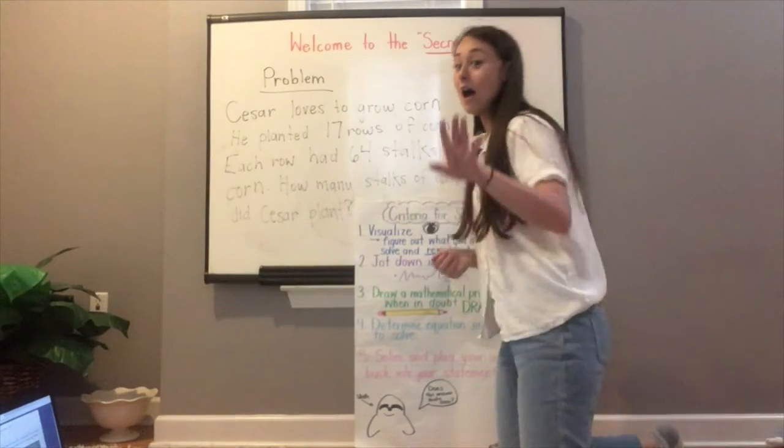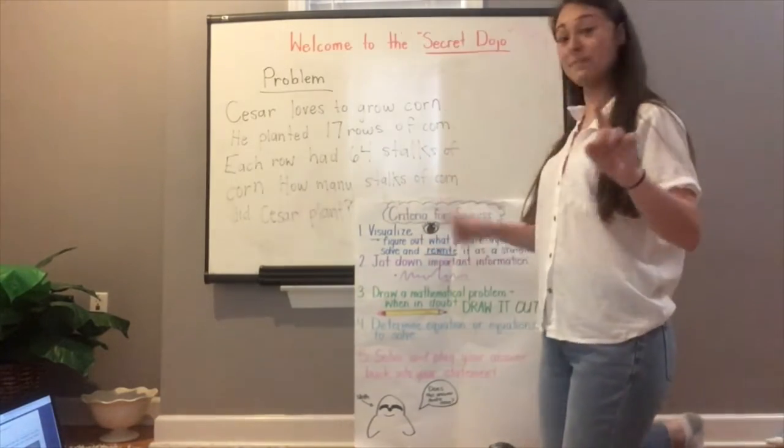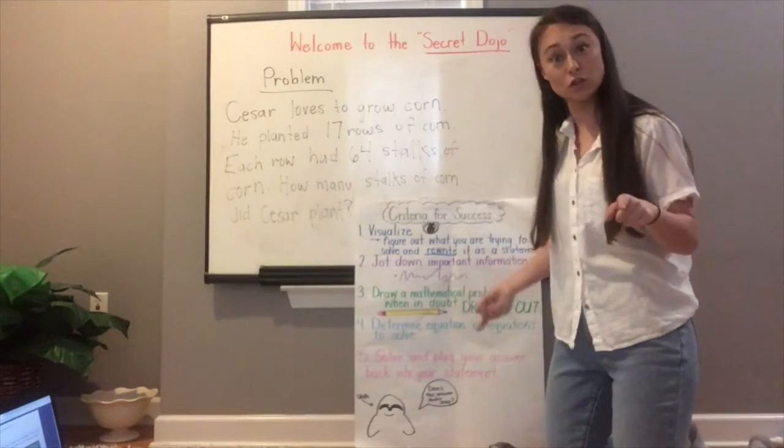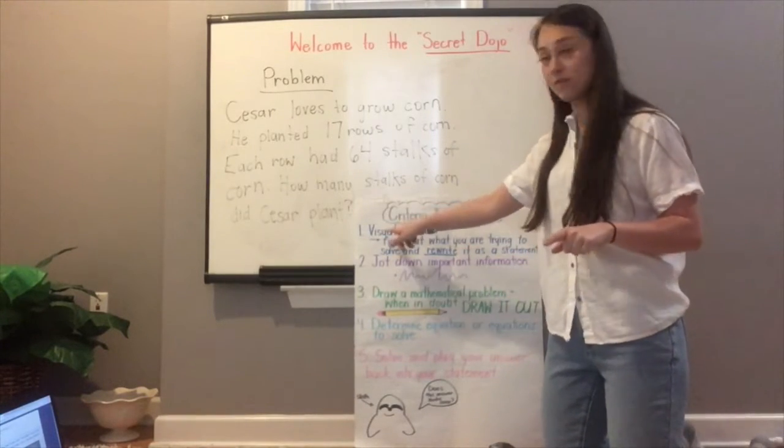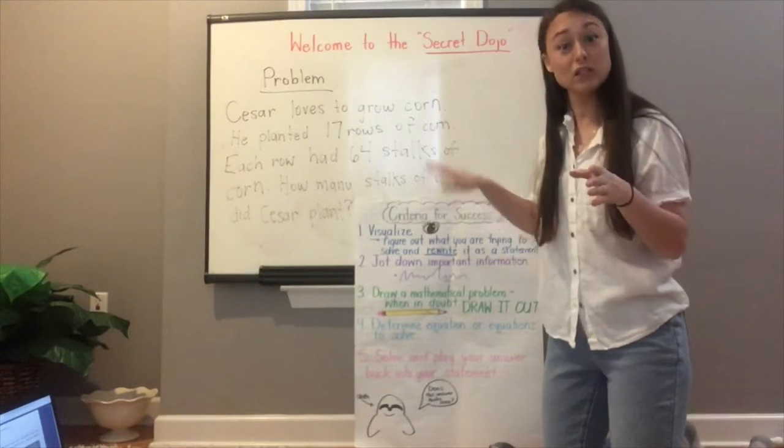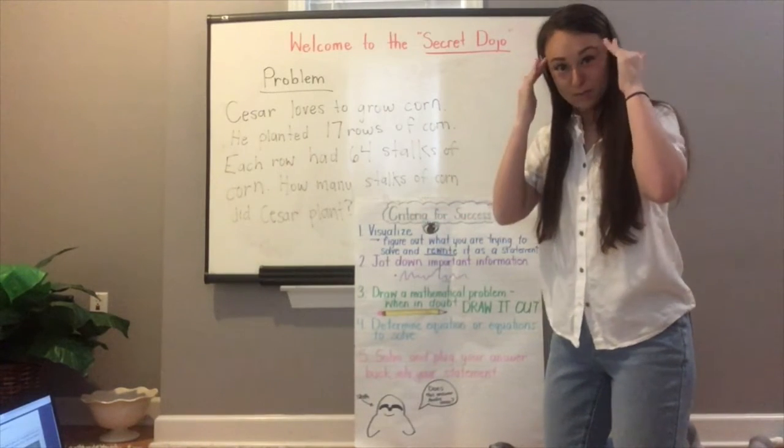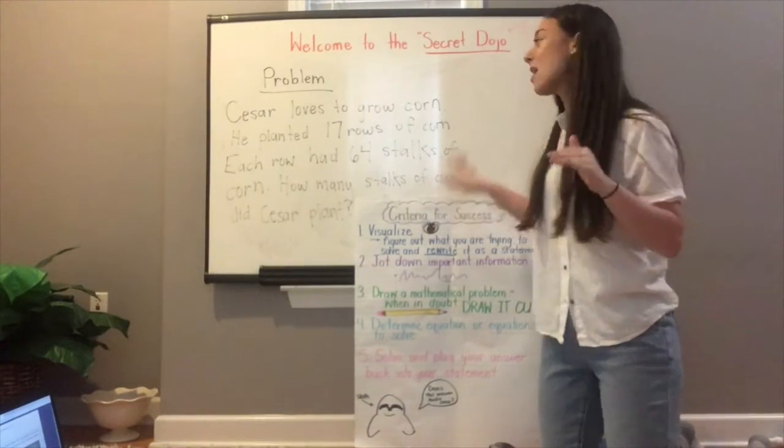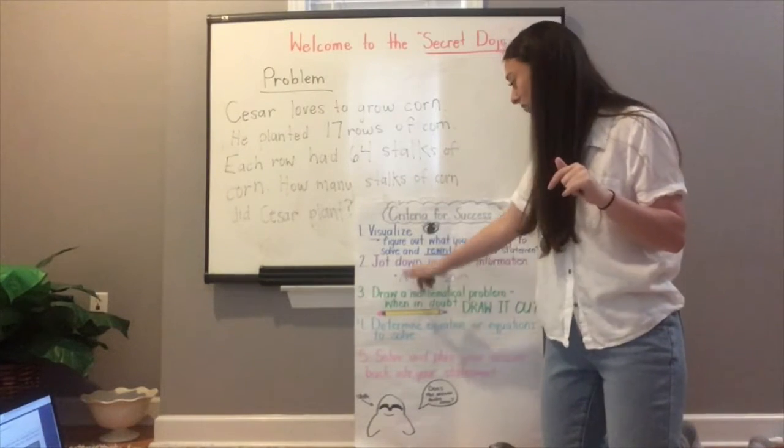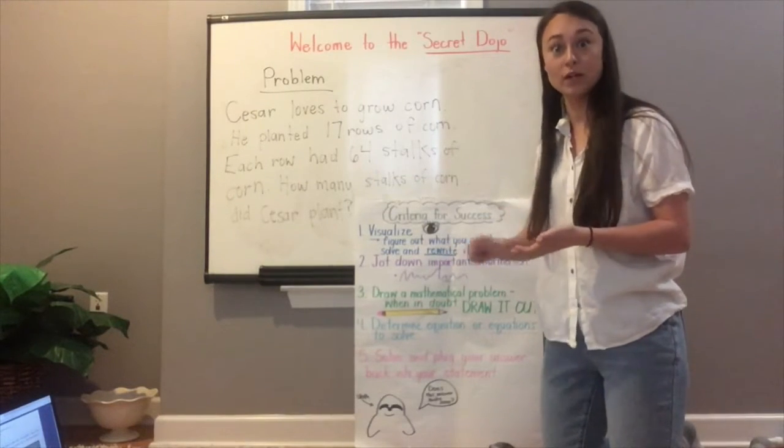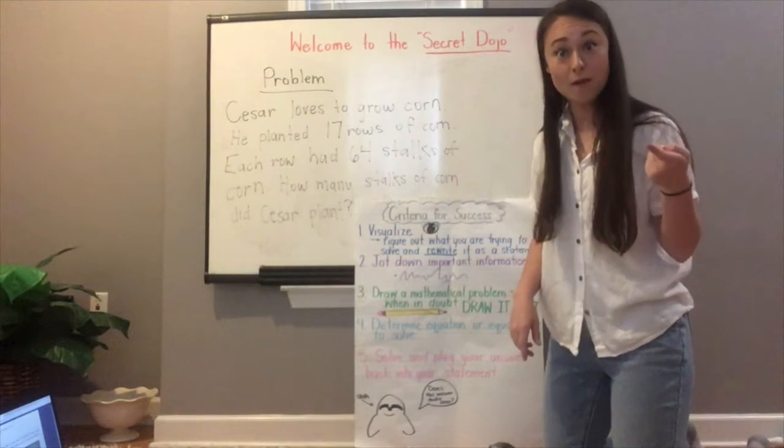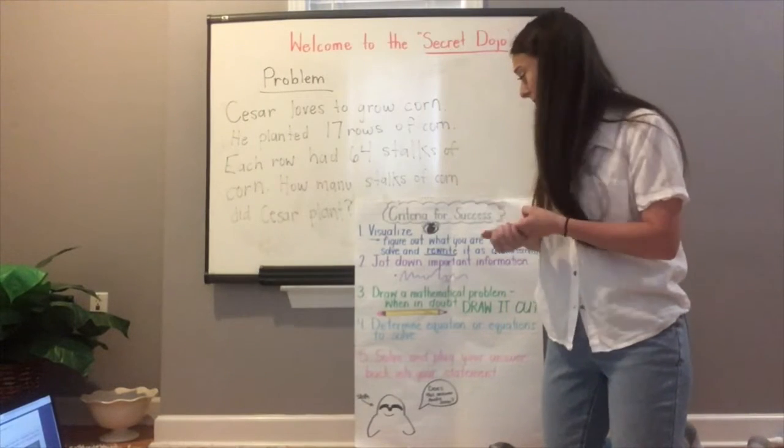Okay, I'm not going to help you with the problem, but I'm going to give you a couple tips that I want you to do as you're solving this. Remember our very first step: visualize. When you go back and you reread this problem, I want you to paint a picture in your head about what is happening. I want you to jot down some important information. Who is my problem about and what is my problem about?